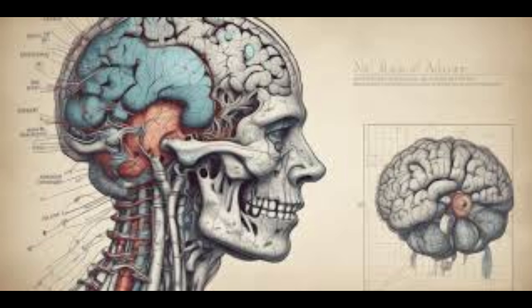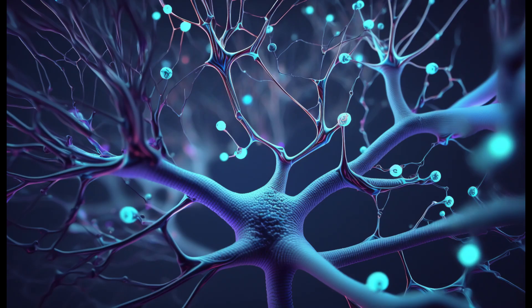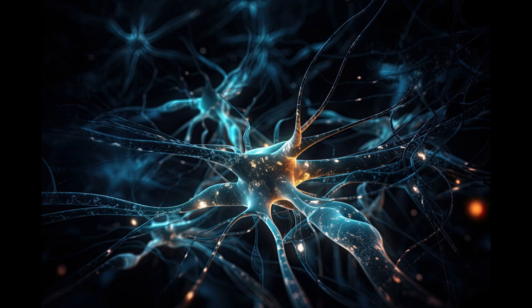Temporal lobe. The temporal lobe is responsible for processing auditory information, including sound and language. It also plays a critical role in memory formation and retrieval.